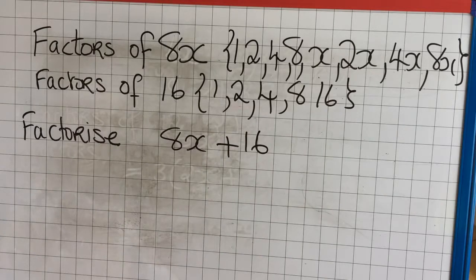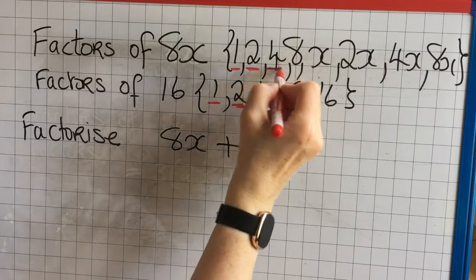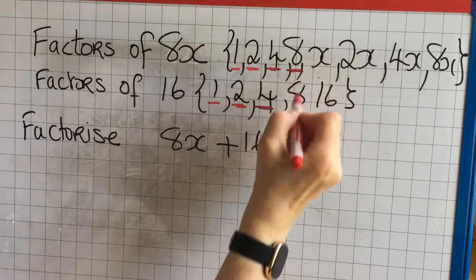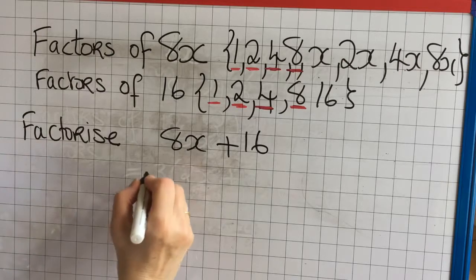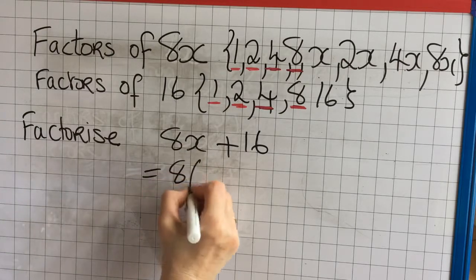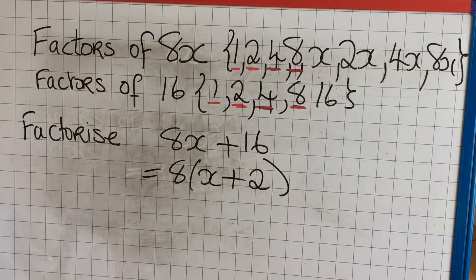Now we're going to factorize the expression 8x plus 16. So I'm underlining all of my common factors. And now I'm going to take the highest one which is 8. So 8 is one factor and now I divide it into 8x plus 16. So x plus 2 is another factor.